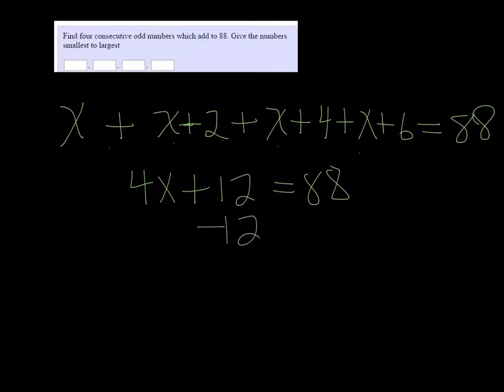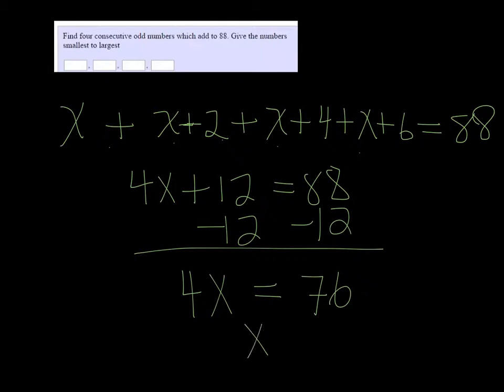Subtract 12 on both sides. So 4x is equal to 76. And then divide 76 by 4, and we finally have x. x is 19.